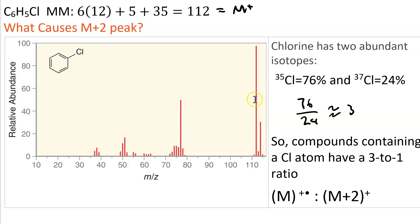If you take the height of the molecular ion peak and divide it by the height of the M plus 2 peak and you get 3, the compound contains chlorine. So the ratio of the molecular ion peak to the M plus 2 peak equals 3 - that tells you the compound contains chlorine.